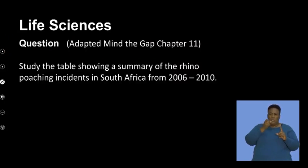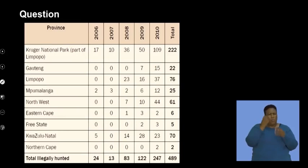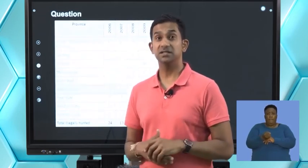The question asks us to study a table showing a summary of rhino poaching incidents in South Africa from 2006 to 2010. There has been a lot of poaching of rhinos in the last 20 years. The government of South Africa, along with South African National Parks Association, has done significant conservation work protecting these precious animals. However, because of such a lucrative industry thriving on the trade of these animals and their products, we've seen a significant decrease in some of our major big five animals, including elephants, rhinos, and lions.